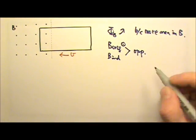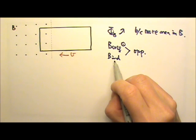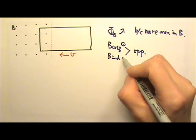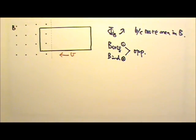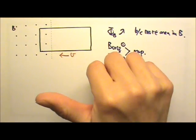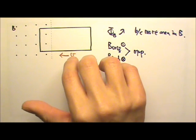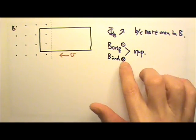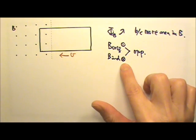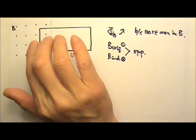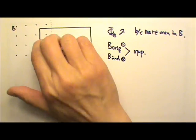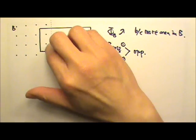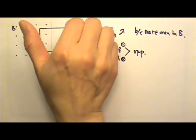Since the original field is out of the paper, we need the induced current to produce a magnetic field that goes into the paper — the opposite direction. Using the right-hand rule with curved fingers in the direction of the magnetic field going into the paper inside the wire loop, the induced current must be flowing clockwise.